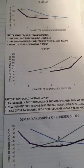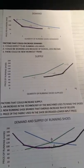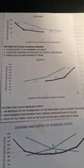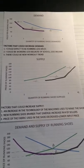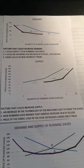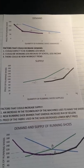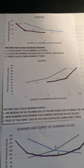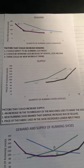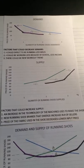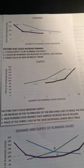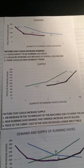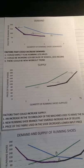The factors that could increase supply include an increase in the technology of the machines used to make the shoes, which would make production more efficient, effective, and cost effective. The second is that new running shoe brands that emerge will increase the number of sellers. And the third is that the price of the fabric used in the shoe decreases, so this would be a lower input price.